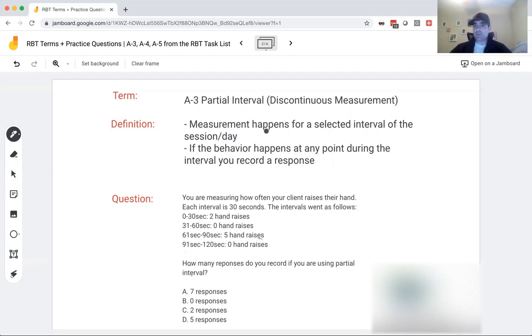When we're doing continuous measurement, like duration, frequency, we're taking data throughout the entire day. For discontinuous measurement, you're picking out 10, 15, 20 minutes and recording what happens during that time. You then take that 15, 20 minutes and you break it into intervals, thus the term interval. So for partial interval, if the behavior happens at any point during those intervals you chose, you record a response. So if my intervals are 30 seconds and the behavior happens at all during those 30 seconds, it counts as a response.